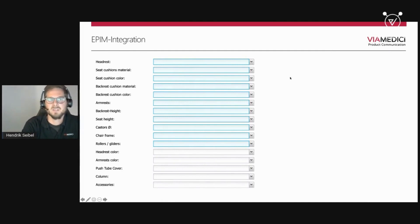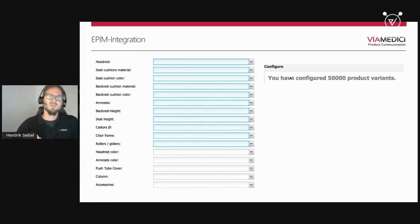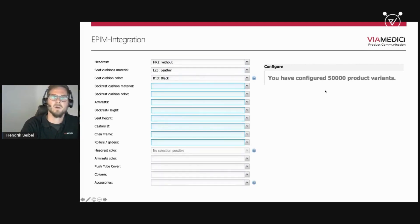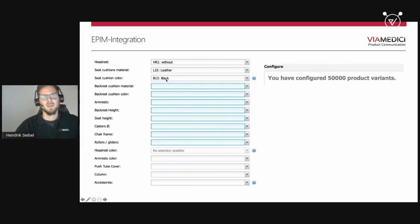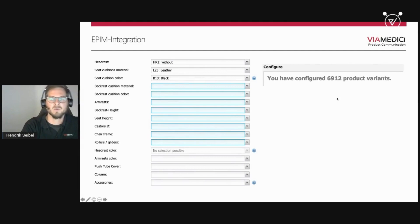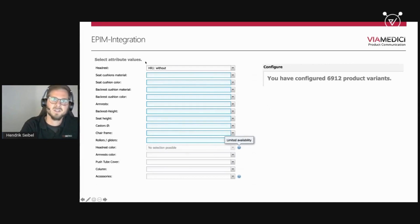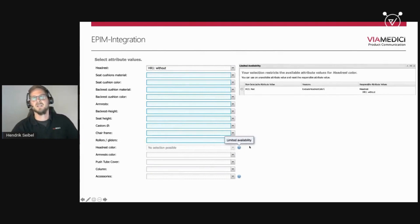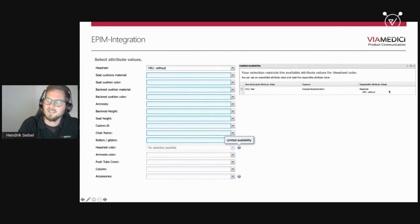Now we see the configurator directly inside the PIM. I can ask the PIM and configurator to show all valid variants based on the rule set — here limited to 50,000, and you can see 50,000 valid variants are shown. I can also pre-select values, for example headrest 'without', seat cushion material leather, and seat cushion color black, then request all valid variants — now only 60,912 product variants remain. The same functionality applies: choosing 'without' makes headrest color unavailable, and the question mark explains why.